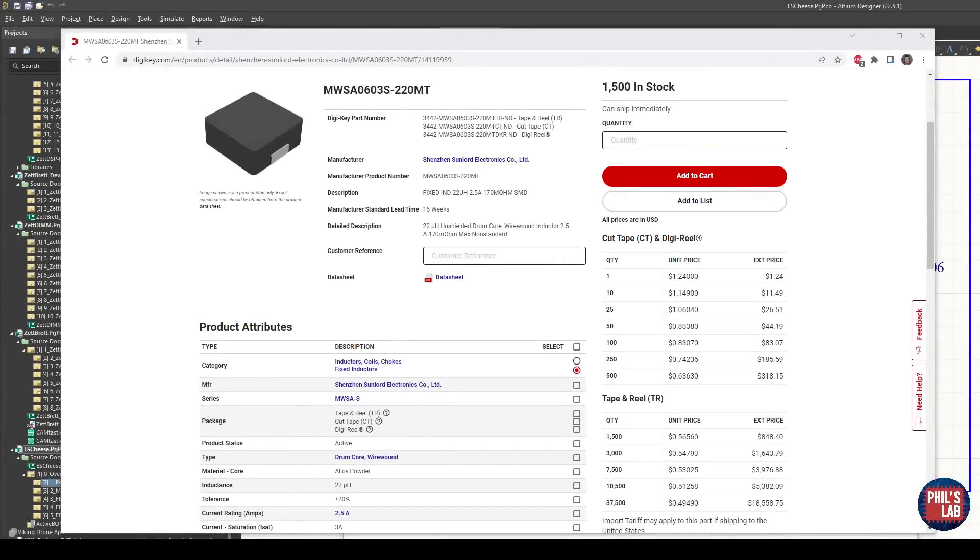The actual inductor I then end up going with is this Sunlord 22 microhenry inductor. You have to watch out for tolerances as well to make sure they are within reasonable bounds. And of course the current rating, 2.5 amps, which is considerably higher than our requirements, but it's good to stay away from minimums. Also make sure that you get shielded inductors typically, and also make sure that the package size is suitable for your requirements and your PCB size and dimensions.